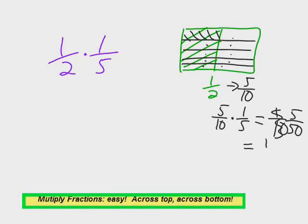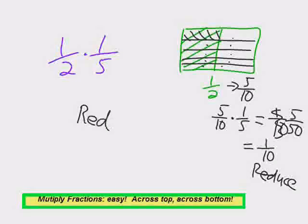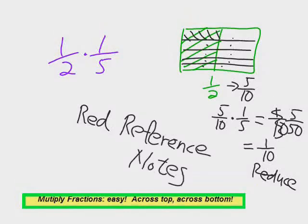So one-half is five-tenths, but you've only got one-fifth of five-tenths. It's the same as saying you've got one chunk out of ten. Or just learn the proper way to do it. Go straight across the top, straight across the bottom. One times one is one. Two times five is ten in the bottom.